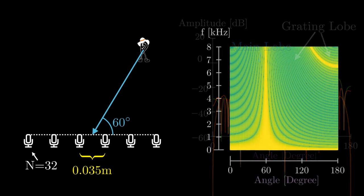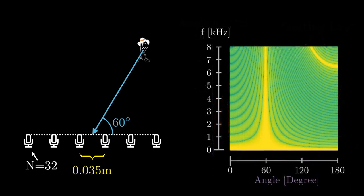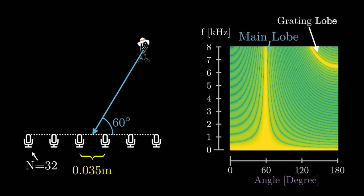The beam pattern shows again the angle on the x-axis, but this time the frequencies are shown on the y-axis and the amplitude is color-coded. Yellow refers to 0 decibel, while darker colors refer to negative amplitude values. You can clearly see the main lobe at 60 degrees, indicated by the yellow color over all frequencies. However, while for lower frequencies no grating lobes are visible, we can see another yellow area in the upper right of the beam pattern. Here, for higher frequencies, grating lobes appear at different angles.